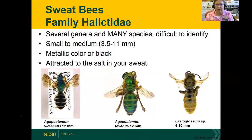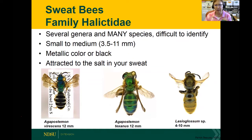One of my favorite families is the sweat bees, the Halictidae. They're very, very small and very colorful — metallic green or black with a beautiful iridescent color in the sun. You might notice them when you're working in your garden and sweating because they are attracted to your salt and sweat. I've had a lot of them on me and they've never stung me — they're very docile. This is one of the most difficult groups to identify; Agapostemon and Lasioglossum are very difficult to get down to species. They also do buzz pollination.